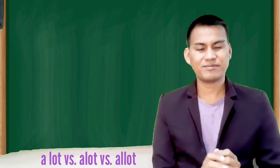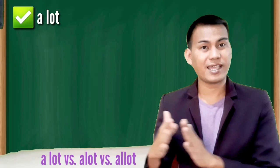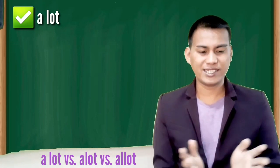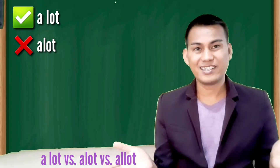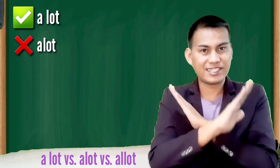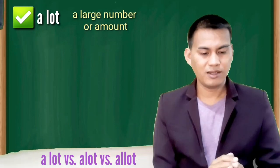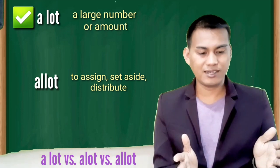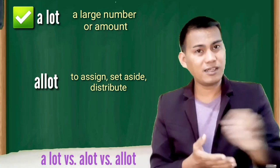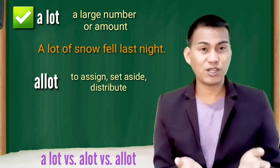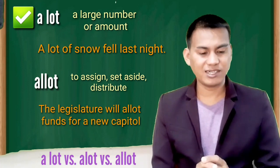A lot, a lot, and allot. A lot, that's two words, a space, a lot, should always be written as two words. So there's no a lot as in A-L-O-T as one word. It means a large number or amount. The verb allot, A-L-L-O-T, means to assign or to set aside or to distribute. A lot of snow fell last night. The legislature will allot funds for a new capital.